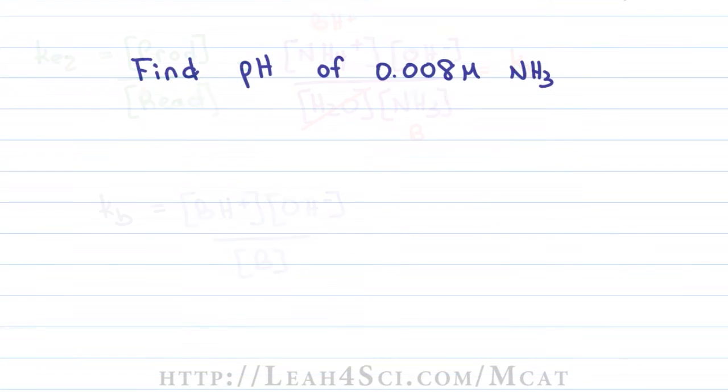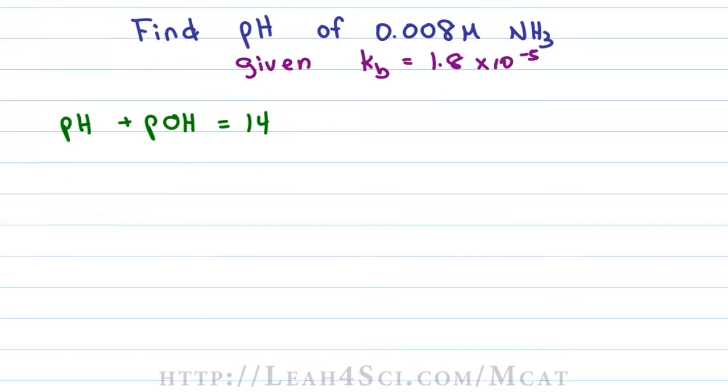Let's take a look at this example. Find the pH of a 0.008 molar solution of NH3 given that the KB for NH3 is 1.8 times 10 to the minus 5. We're asked to find the pH which is an acidic property but we're given the KB of a base. So the first equation we have to keep in mind is that pH plus POH is equal to PKW which is equal to 14.